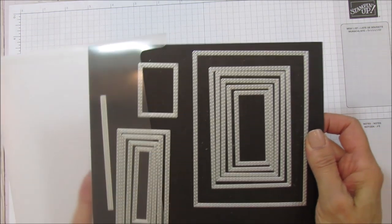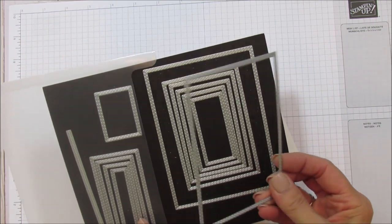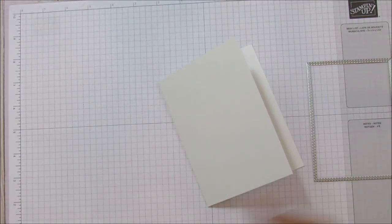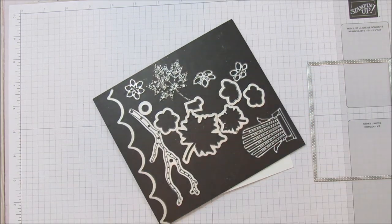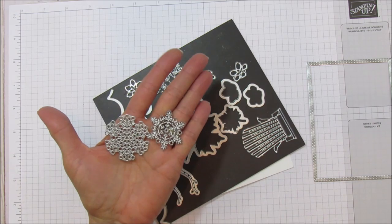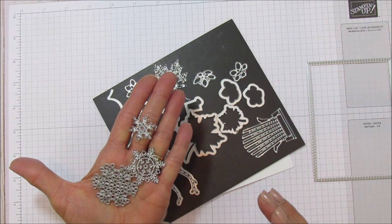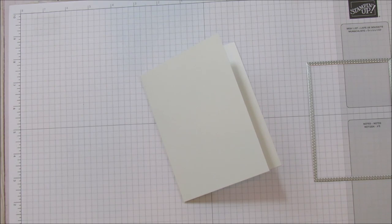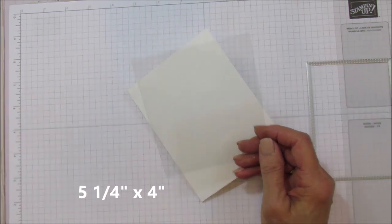Like I said, we're using the rectangle stitch framelits. I'm using the second largest of the stitched rectangles. For the snowflakes I'm using the seasonal layers and I'm using all three of the snowflakes from this one. They're all three different shapes and that is it.